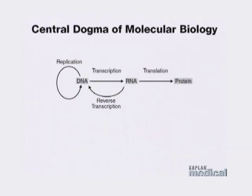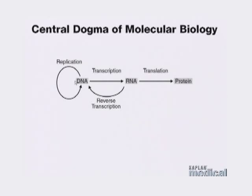Let's first begin with the central dogma of molecular biology. We know that for the central dogma, DNA is the hereditary material. It's the blueprint for making all of the proteins within our cells. It's what makes us who we are — what distinguishes us from one another and from other species. But DNA isn't really the workhorse of the cell. DNA is kind of like the blueprint from which everything else is going to be built.